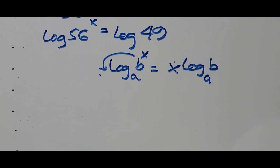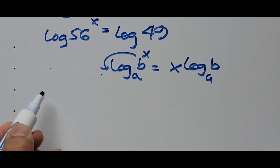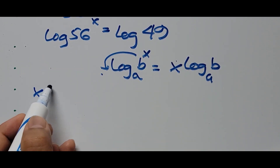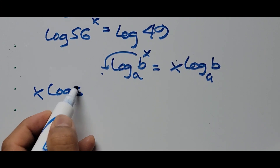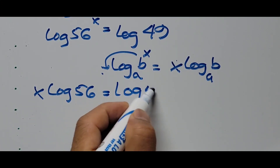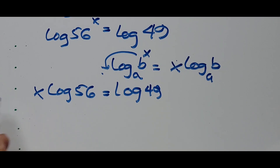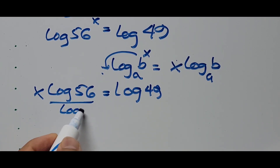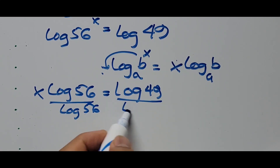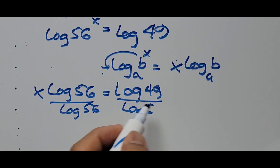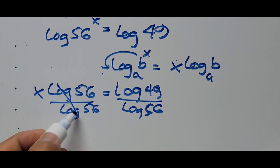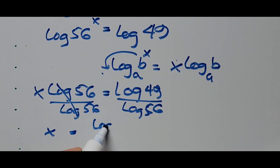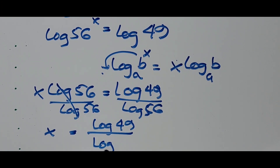Applying this principle, we get x times log of 56 equals log of 49. Solving for x, we divide both sides by log 56, giving x equals log of 49 divided by log of 56. That's the exact answer for Method 1.